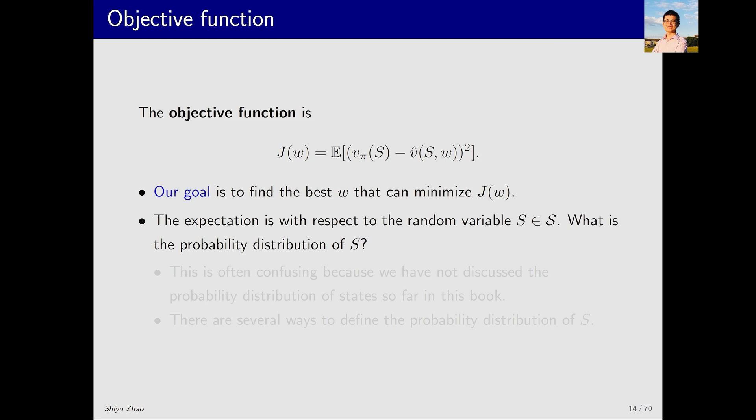It's worth noting that s here is a random variable. A random variable must have a probability distribution. What is the probability distribution of s? This question can be asked in another way. Since there's an expectation involved, what does this expectation essentially do? It averages over all states. How should this average be calculated? The concept of probability distribution of states may be confusing for beginners, so we will explain it in the following.